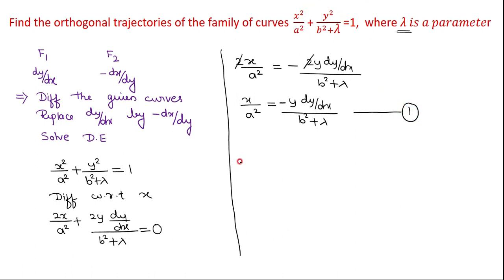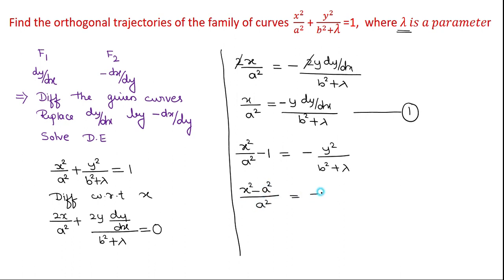Now eliminating λ from equation 1. We can write x²/a² − 1 = −y²/b² + λ, which simplifies to (x² − a²)/a² = −y²/b² + λ. We take this as equation 2. From equations 1 and 2, we need to eliminate λ. We observe that if we divide equation 1 by equation 2, we get an equation independent of λ.